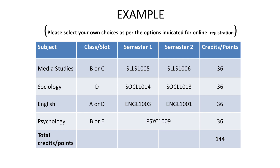Ensure that all your modules are registered for both Semester 1 and Semester 2. For example, Media will equal 18 points — this means you'll select Media 1A and Media 1B, and this will give you 36 points. If you select Sociology, you'll do SOCL1014, which is Identity and Society 1, equal to 18 points. In Semester 2, you'll select SOCL1013, which is Southern Africa in the Era of Globalisation 1, equal to 18 points, giving you 36 points in total.